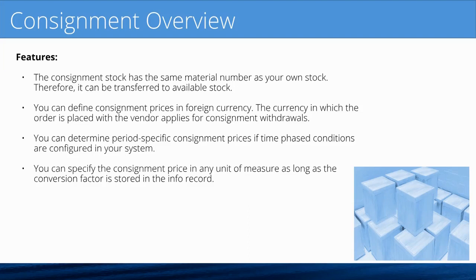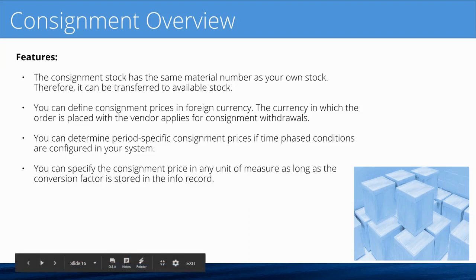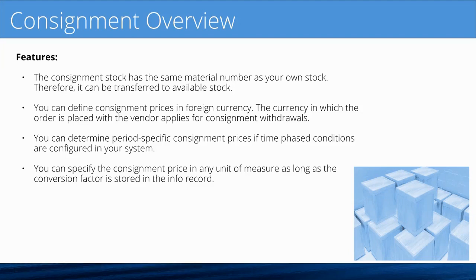You can determine period-specific consignment prices if time-phased conditions are configured. If you're familiar with condition records, you can have multiple validity periods — a valid-from and valid-to date with a price for each period, as long as they don't overlap. You can also specify consignment prices in any unit of measure as long as the conversion factor is maintained in the info record. For example, if your stock-keeping unit is kilograms but your supplier orders in pounds, you can manage that with a conversion factor between the two.